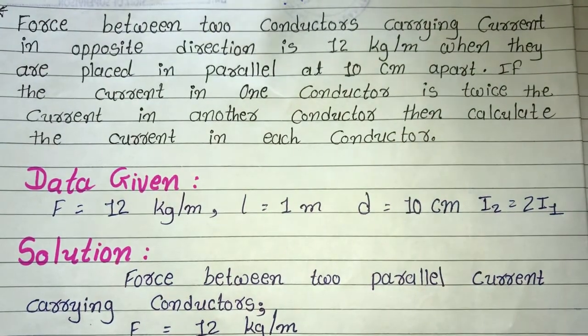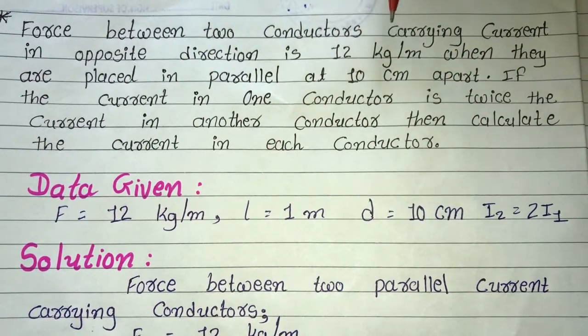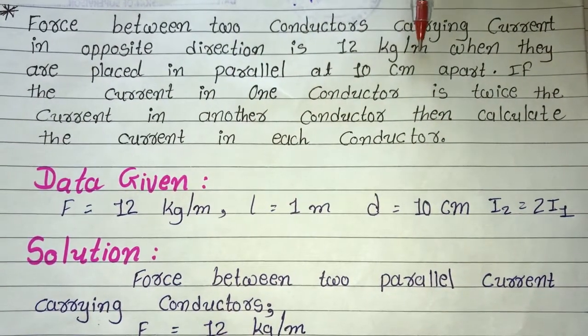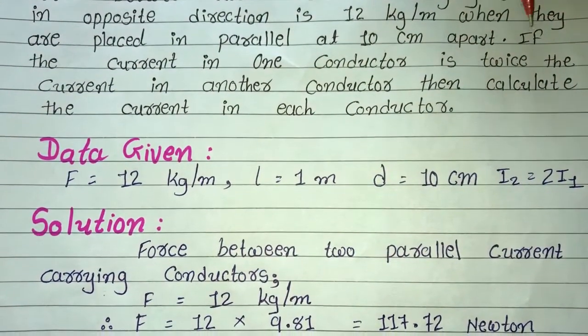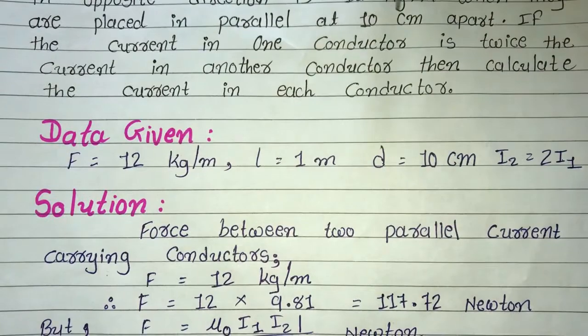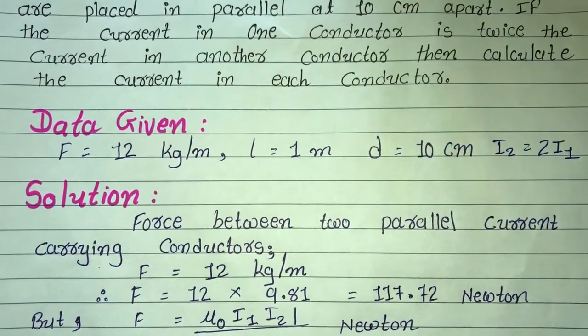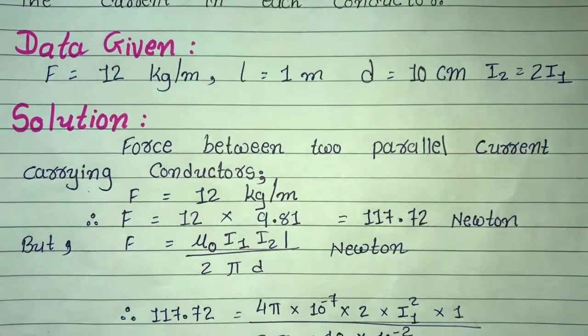Force between two conductors carrying current in opposite direction is 12 kg per meter. When they are placed in parallel at 10 cm apart, if the current in one conductor is twice the current in another conductor, then calculate the current in each conductor. Two conductors means how much current flows here? We have to find out here. That's what we will do here.